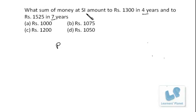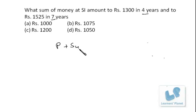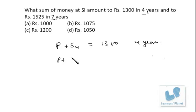In the first case, the amount becomes 1300 in four years. Amount equals principal plus simple interest. So principal plus simple interest for four years equals rupees 1300, and principal plus simple interest for seven years equals 1525.